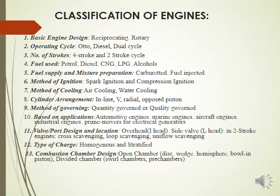An inline engine has all cylinders aligned in one row with no offset and is considerably easier to build than a horizontally opposed engine or V engine. A V engine is a common configuration in which cylinders and pistons are aligned in two separate planes or banks, appearing V-shaped when viewed along the crankshaft axis. A radial engine has cylinders radiating outward from a central crankcase like the spokes of a wheel. An opposed-piston engine has a piston at both ends of each cylinder and no cylinder head.